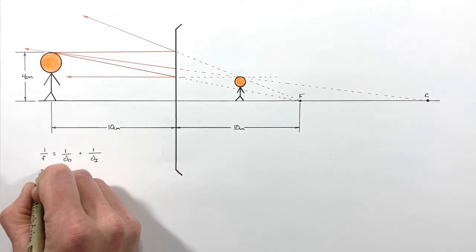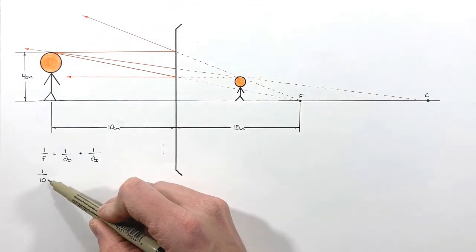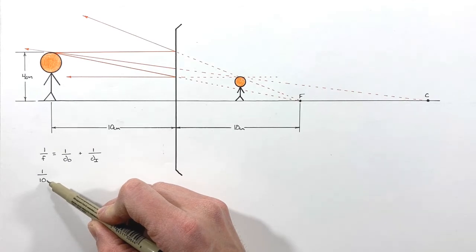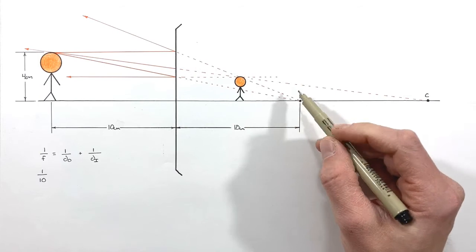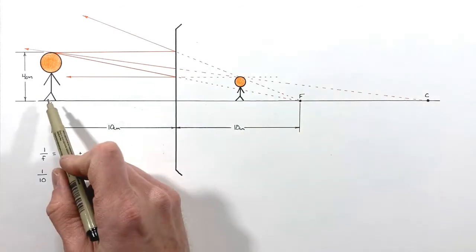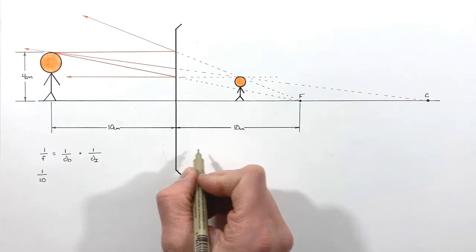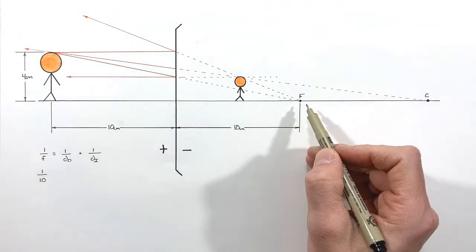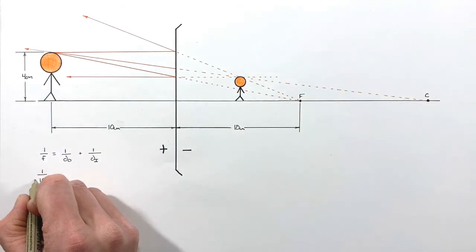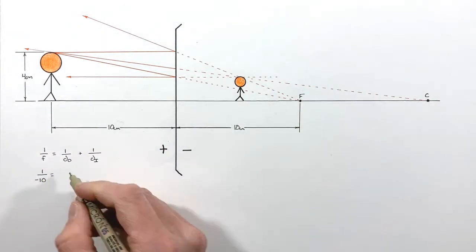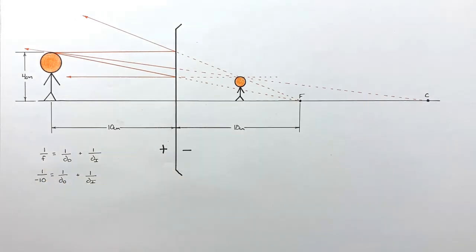The focal length is 10 centimeters, but since we're dealing with a convex mirror we have to be extremely careful. On a convex mirror the focal point is behind the mirror, on the opposite side from the object. If we consider the mirror as having a positive and negative side, the focal point is on the negative side, which means the focal length must be negative 10 centimeters.